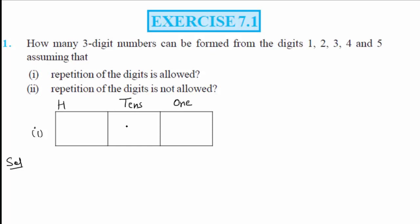If I talk about the 100's place, the available digits are 1, 2, 3, 4, 5 — so in the 100's place, how many options are available? You have all the numbers available, so the total options available are 5.